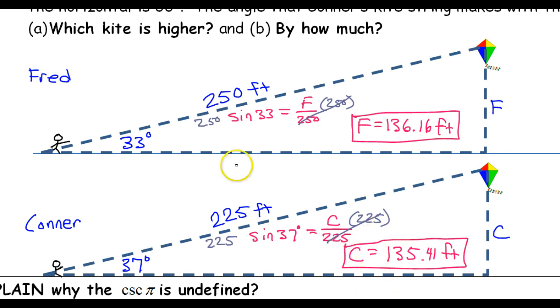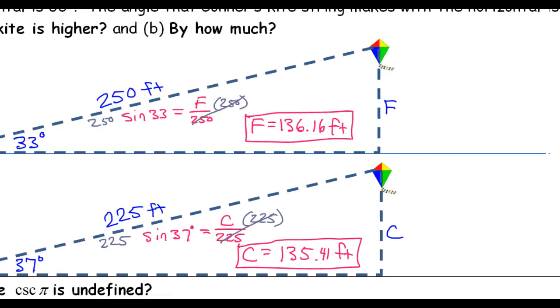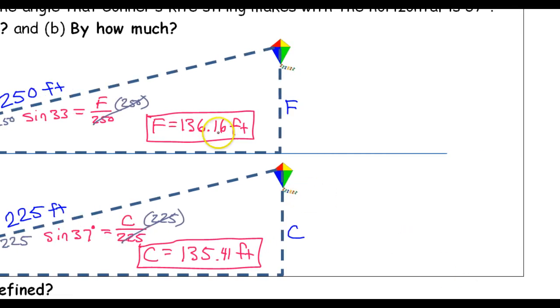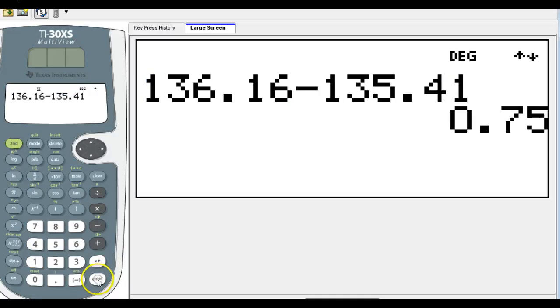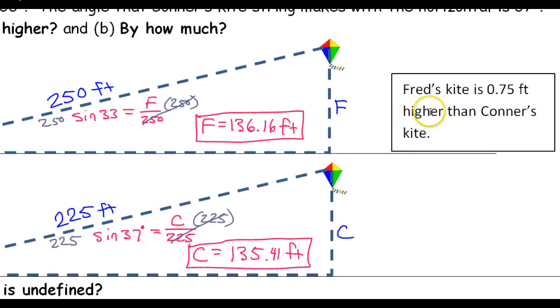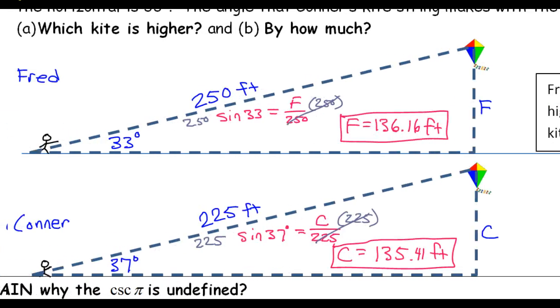So as you can see, Fred's kite is higher and to know exactly how much higher we just have to subtract. 0.75 feet. So there you go. Fred's kite is 0.75 feet higher than Connor's kite. Here endeth the lesson.